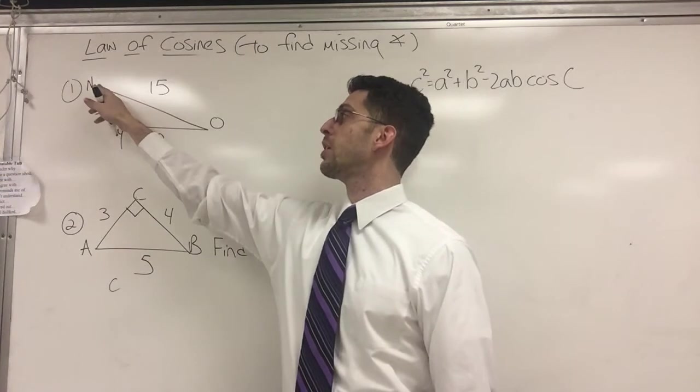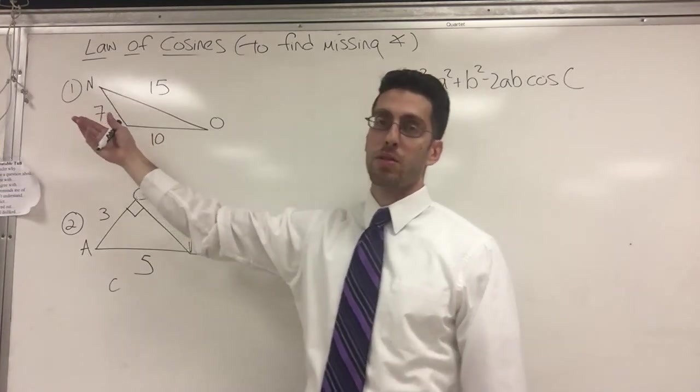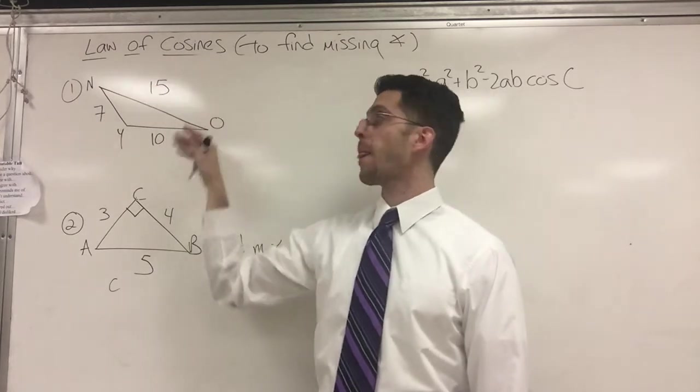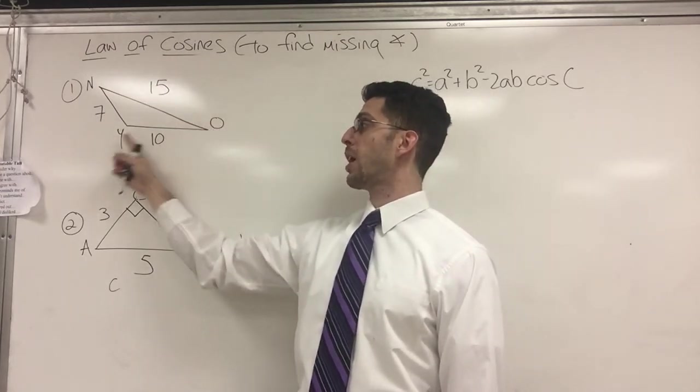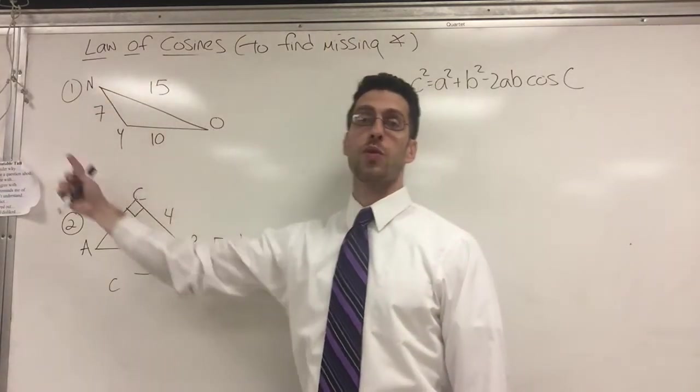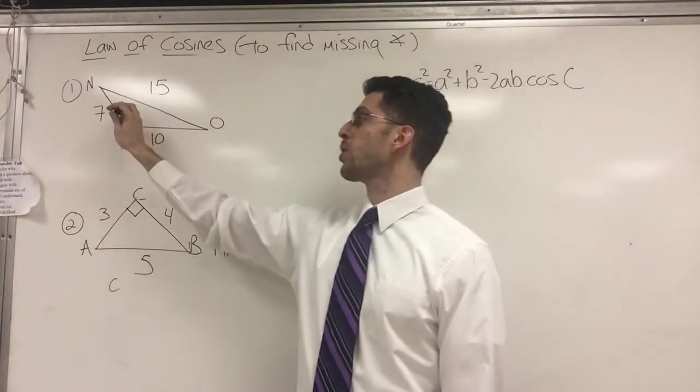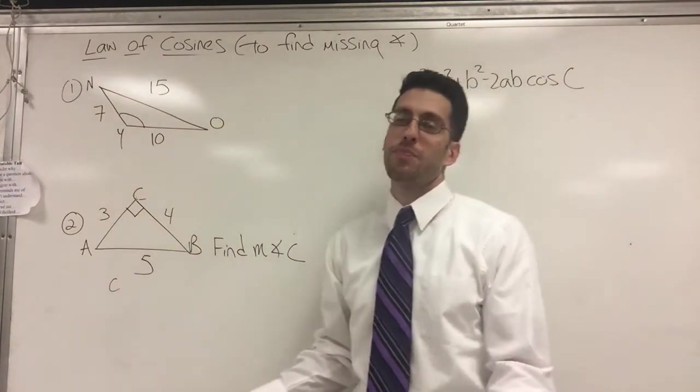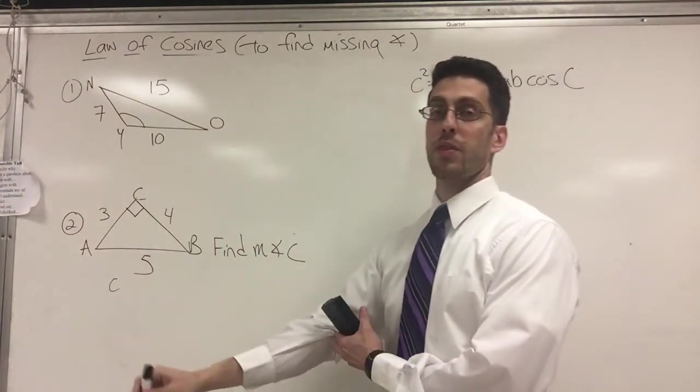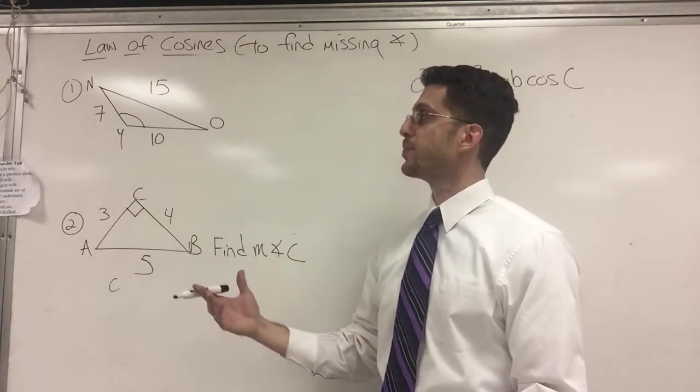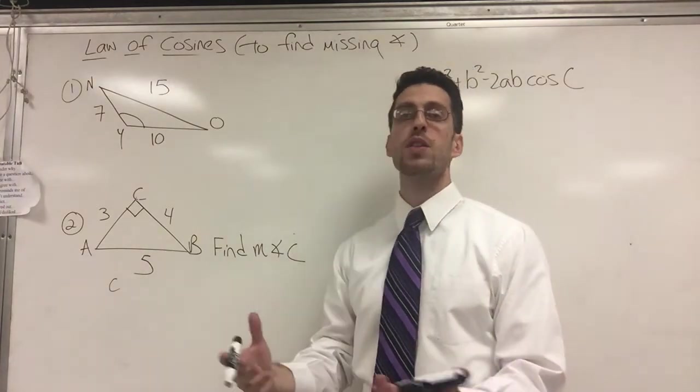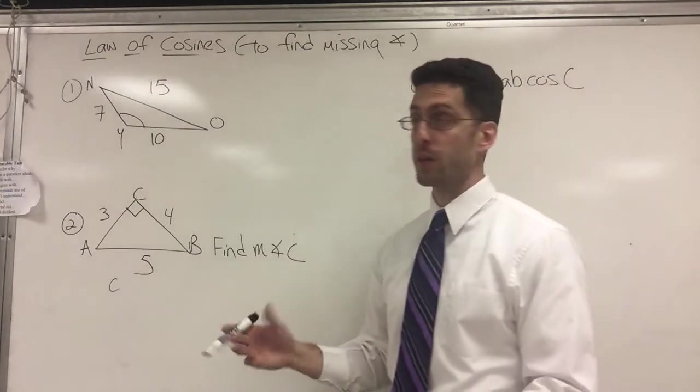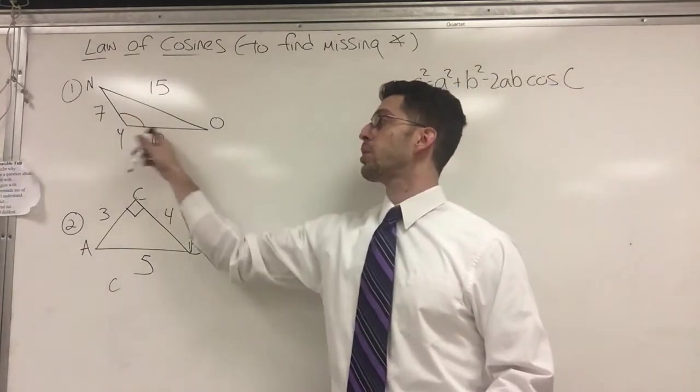So this triangle could represent anything. Maybe there's a lake. This is a popular test question actually. From N to O, it goes across the lake. And maybe from L to Y and Y to N goes around the lake. So they want to know what angle should I build my bridge at or something like that. It's useful.